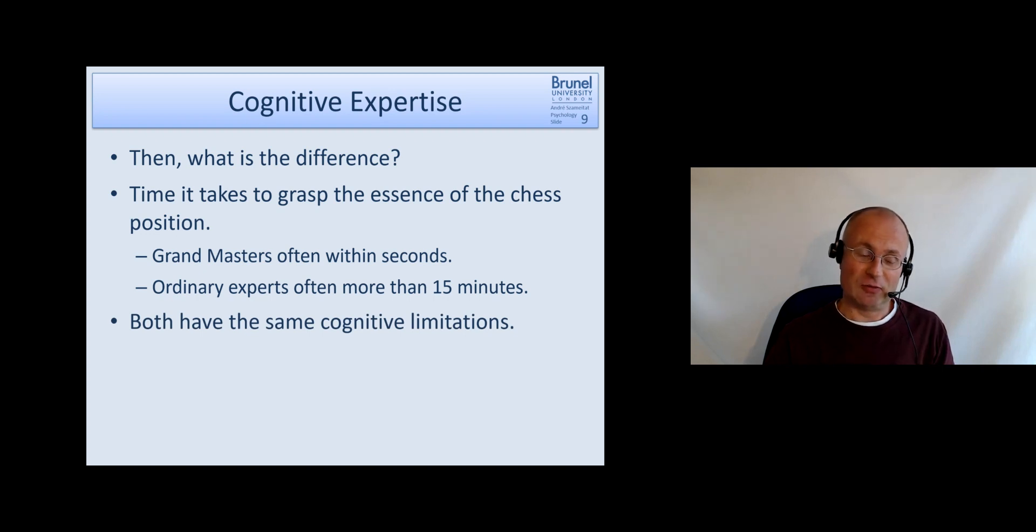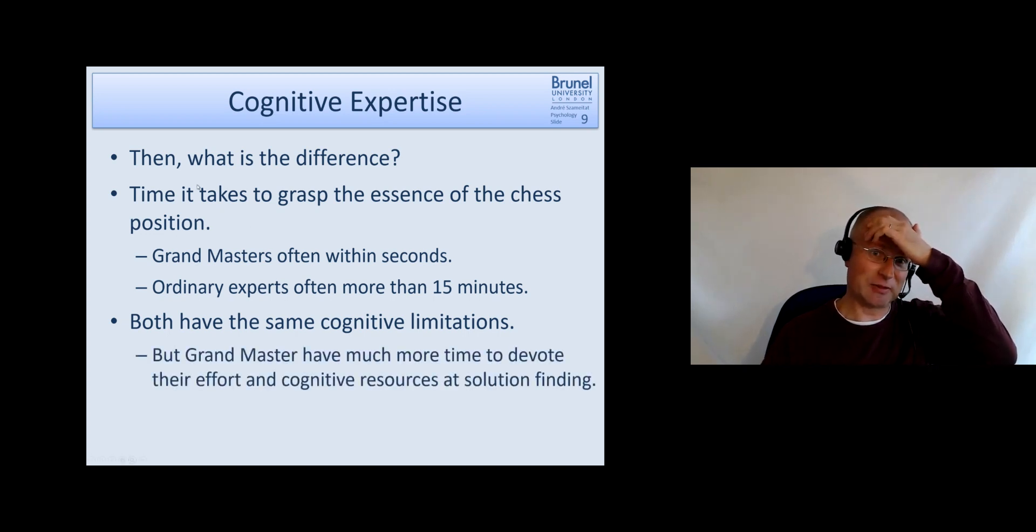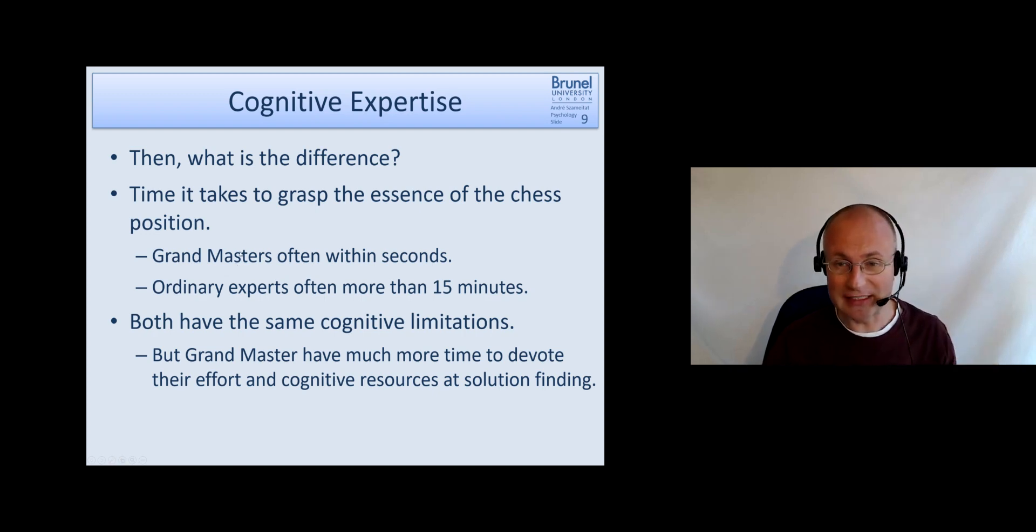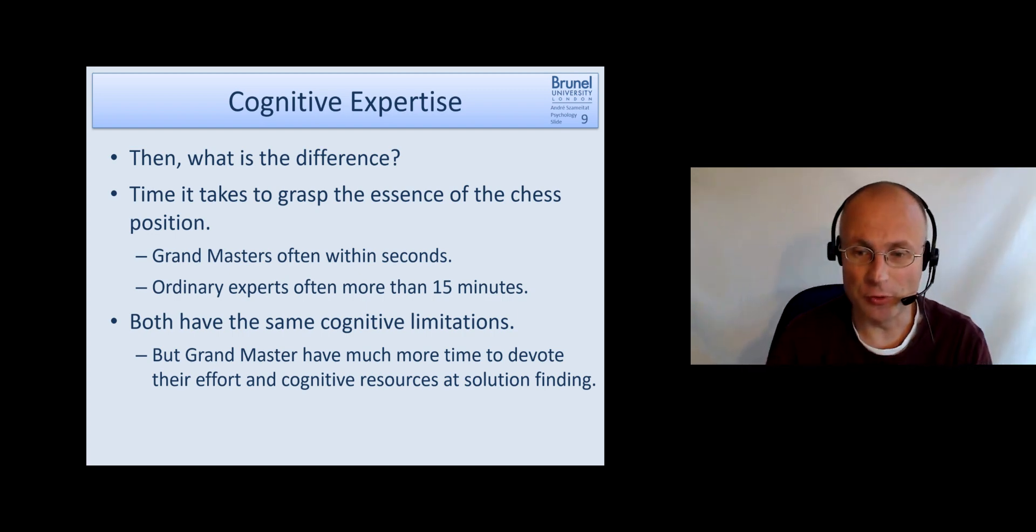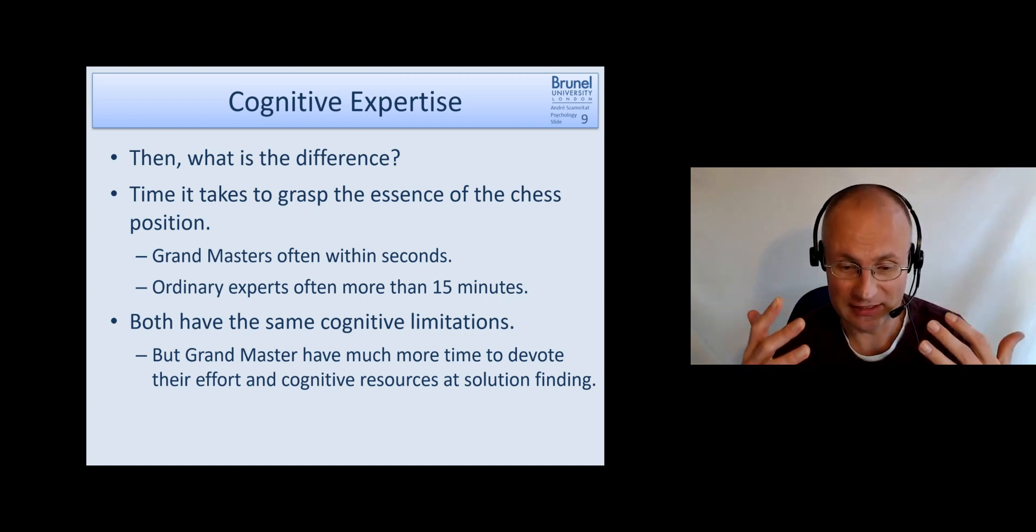However, although both have the same cognitive limitations, because grandmasters can grasp the chess position so quickly, they have more time and more cognitive resources that they can devote to find a solution. They are done with analyzing and then they can think about the solution, while the other person is still analyzing and trying to understand.